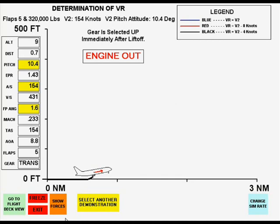For these simulated conditions, the minimum V-2 is 154 knots, which easily exceeds the 2.4% climb gradient by climbing at better than 1.4 degrees. The pitch attitude for this climb is noted since rotation to this attitude will occur at V-R.